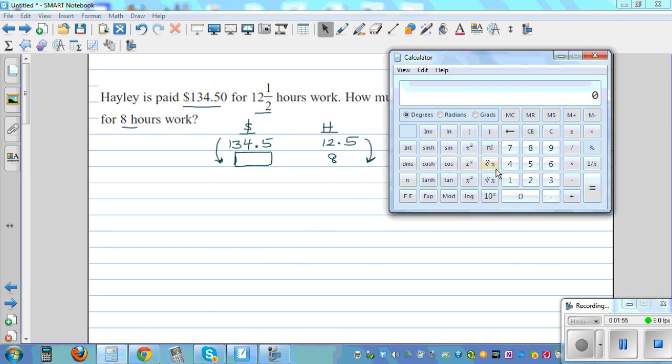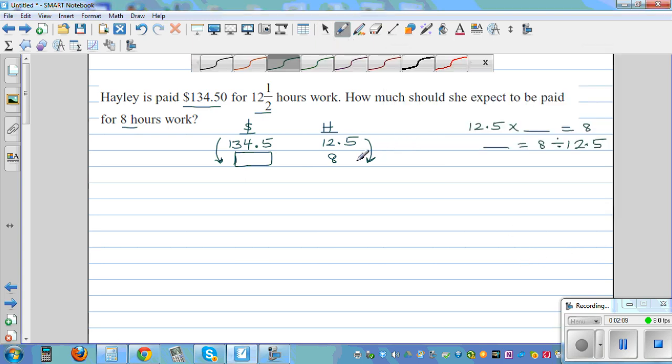I'll go 8 divided by 12.5. This is called a factor, and this is called a direct proportion. If this is decreasing, this is also decreasing. So it is 0.64. That means 12 times 0.64 should give you 8.